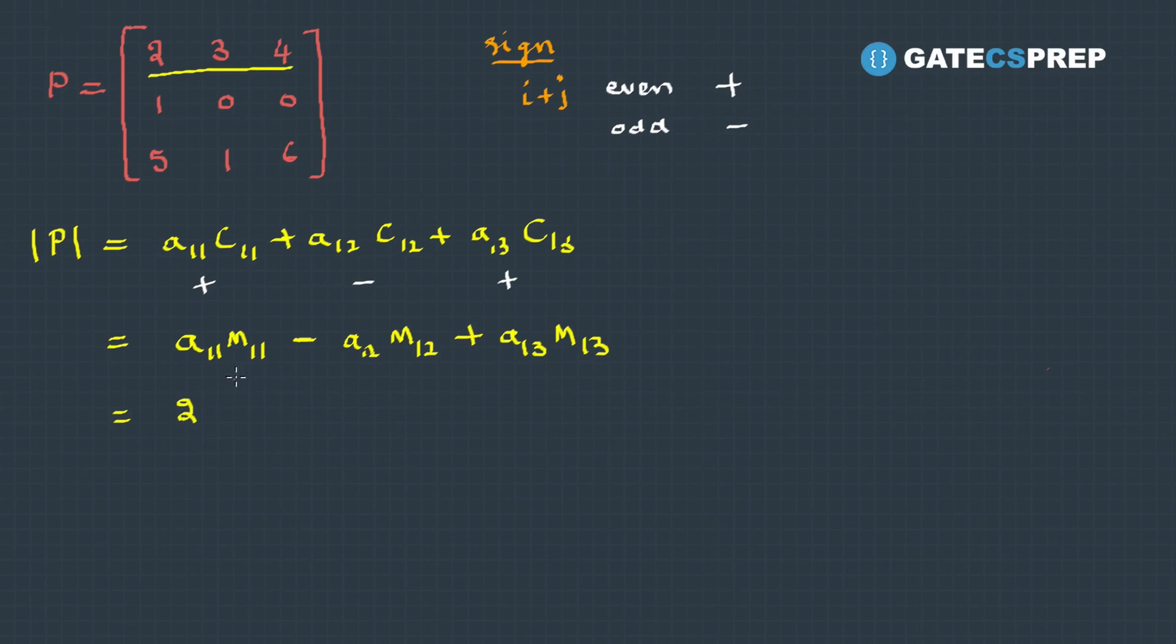For which we ignore this row and this column, we need to take determinant of this, which is 0 into 6 minus 0 into 1, and so on.